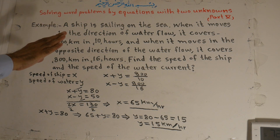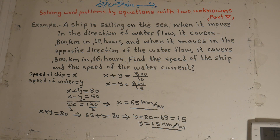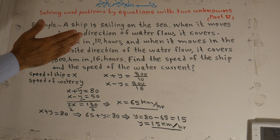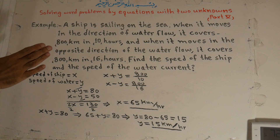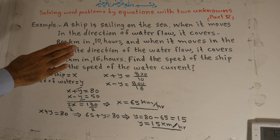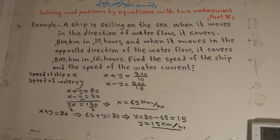To repeat the example: a ship is sailing on the sea. When it moves in the direction of water flow, it covers 800 km in 10 hours. When it moves in the opposite direction of the water flow, it covers 800 km in 16 hours. Find the speed of the ship and the speed of the water current.